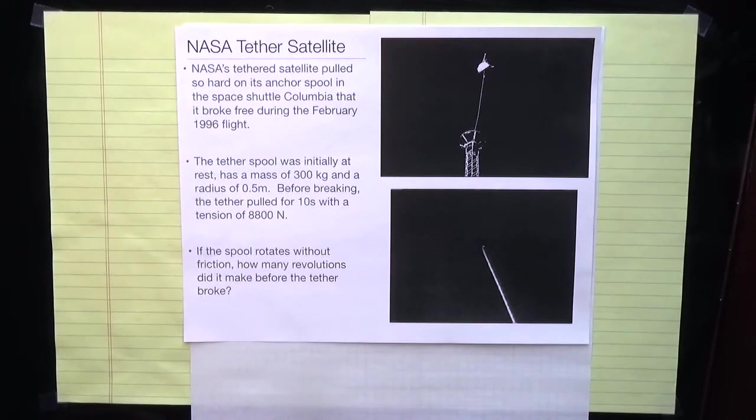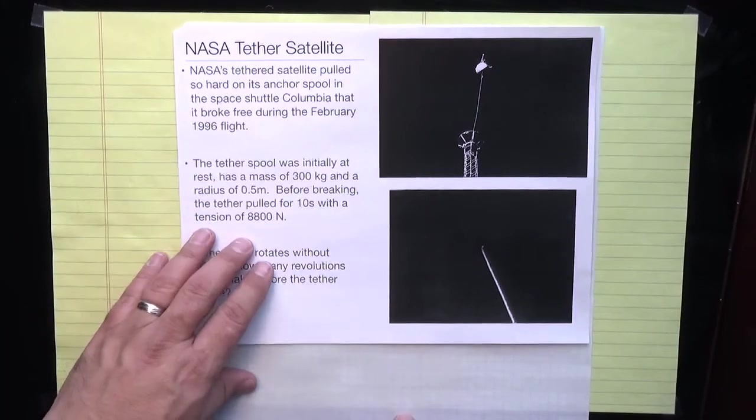That's a problem. It doesn't look like it has a lot of information in it, but in fact it does, and we can use that information to answer the questions. So what is our goal here? We have two steps that we're going to go through. Step one, we're going to find the torque tau.